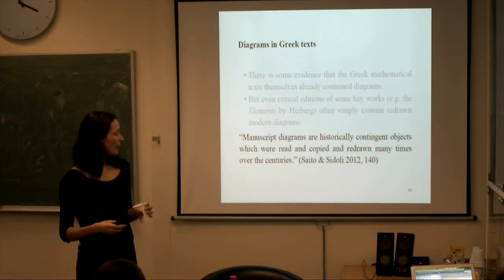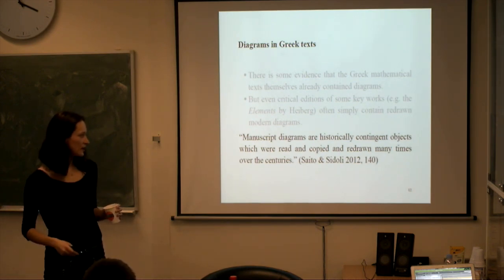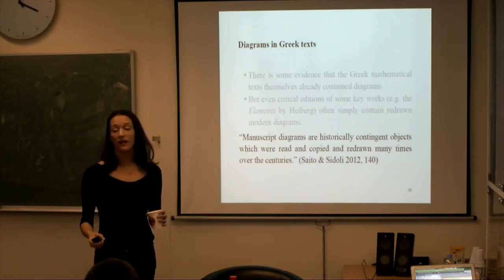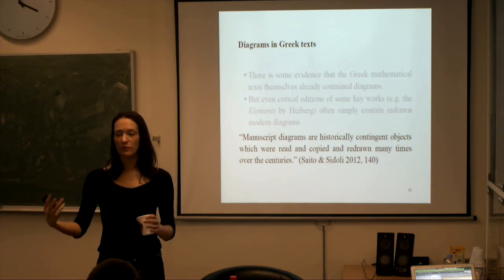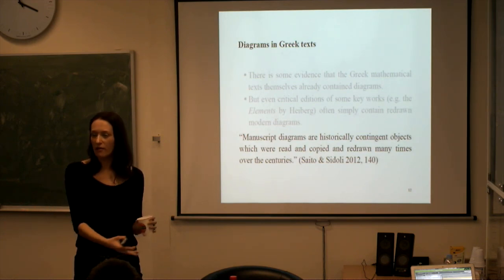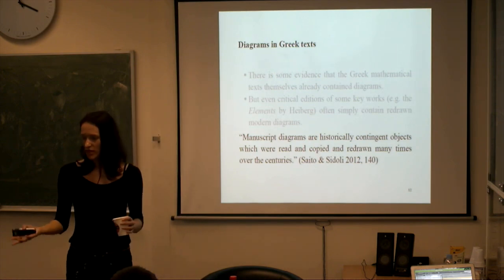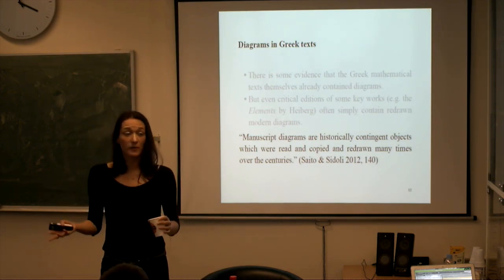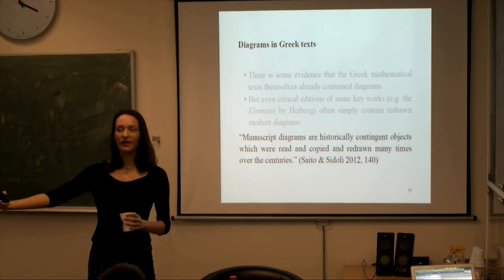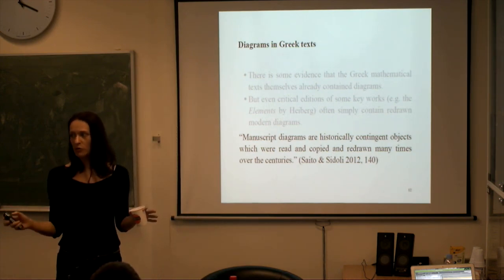There's a chapter in the Chemla volume about the manuscript tradition for diagrams in classical texts. It notes that manuscript diagrams are historically contingent objects which were read, copied, and redrawn many times over the centuries. Even if we have a medieval manuscript of the Elements with diagrams, nothing guarantees these match the originals. There are layers and layers of reinterpretation. So when you read Euclid and see a beautiful diagram, we don't know if that was the original, or what it looked like.